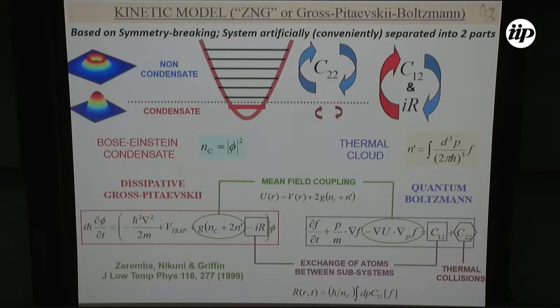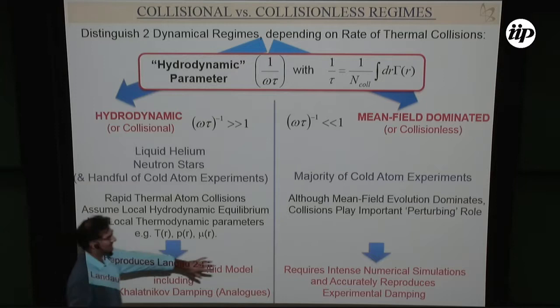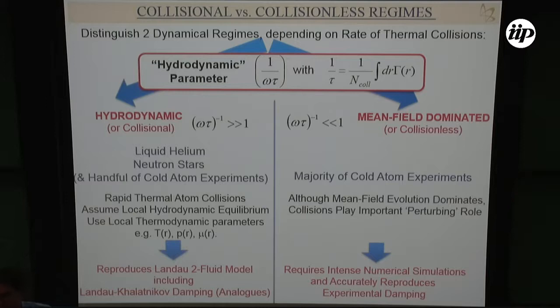I prefer the term 'mean field-dominated' rather than 'collisionless regime,' because collisionless suggests there are no collisions — but actually all the physics comes from the collisions. I told Alan Griffin many times about that. The key thing is how fast collisions are happening. In the majority of cold-atom experiments, they are in the collisionless, mean-field-dominated regime.